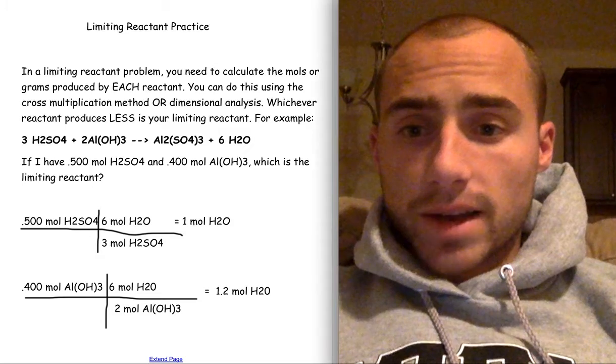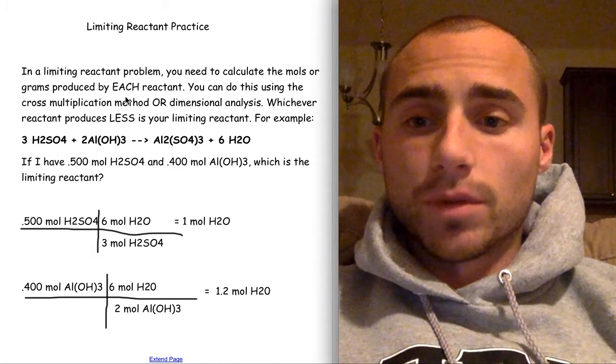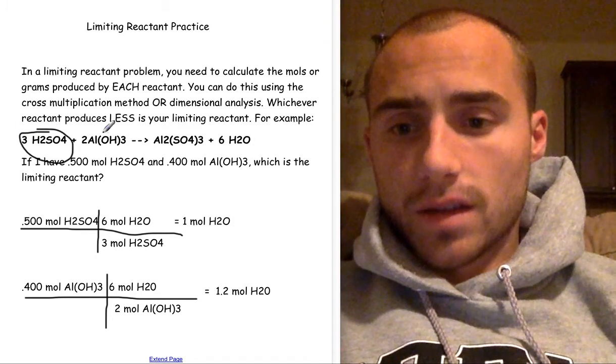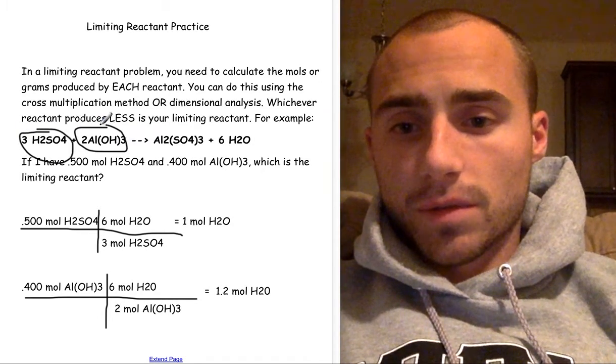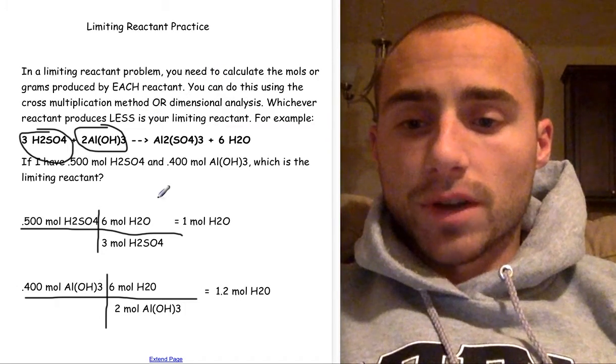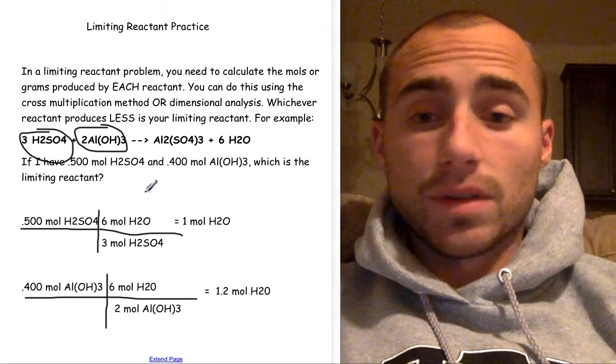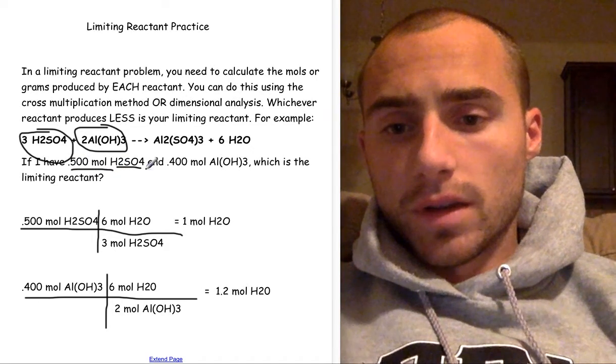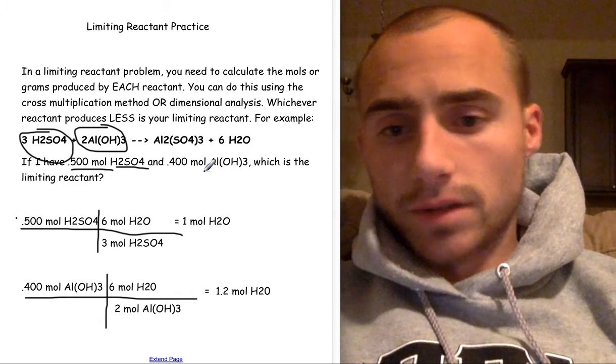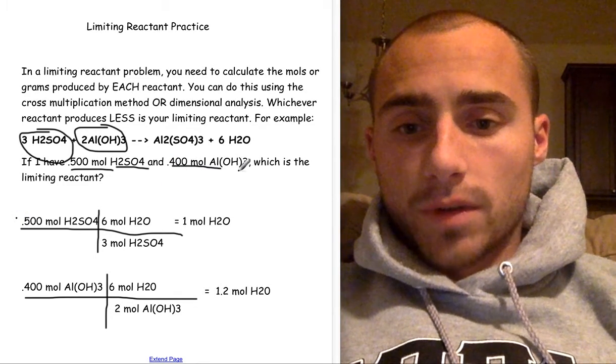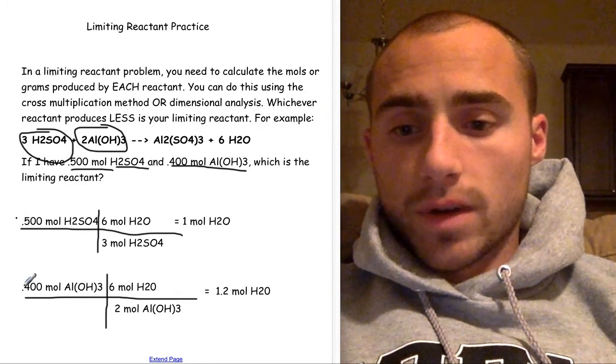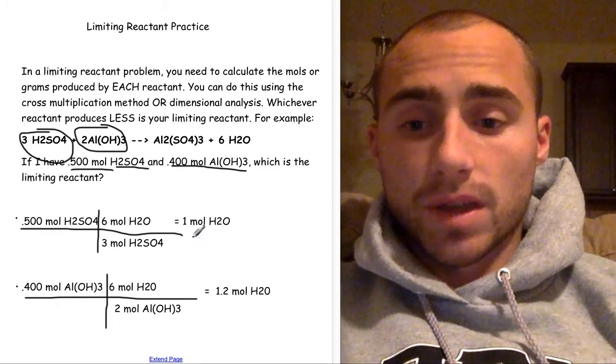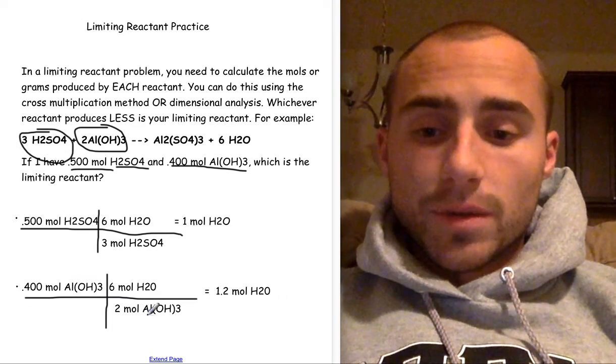Limiting reactant practice here is two problems. In a limiting reactant problem, you need to calculate the moles produced by each reactant. So in this case, you have to calculate the moles produced by this and produced by this because they're both reactants. You can do this by using cross multiplication or dimensional analysis. I have the example using dimensional analysis. So important things in the problem. If given half a mole of H2SO4, wrote that down right here. And four hundredths of a mole of Al(OH)3, wrote that down right here. So write down your two givens first, and then set up your picket fence.